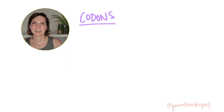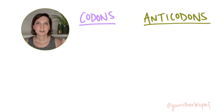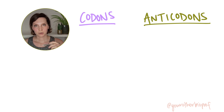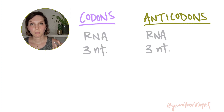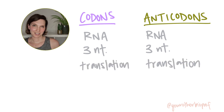Hi, biology friends. I'm Sarah, and I'm your other biology professor. In this video, we're going to do a little compare and contrast with codons and anticodons. Let's start with some similarities. Both codons and anticodons are pieces of RNA that are three nucleotides long, and they're important in the process of translation — building proteins.